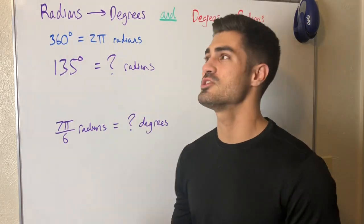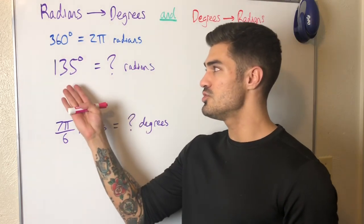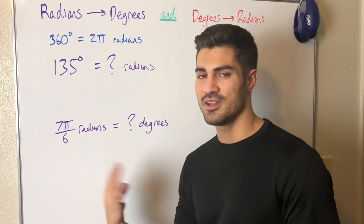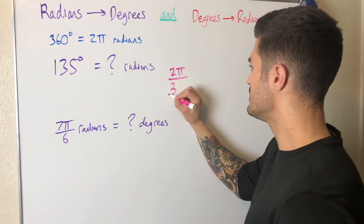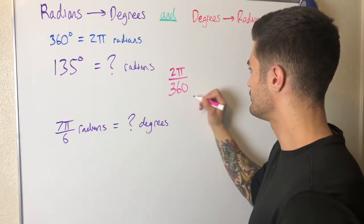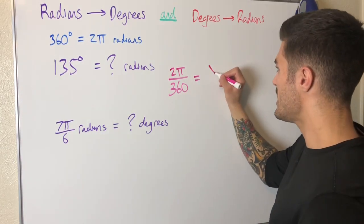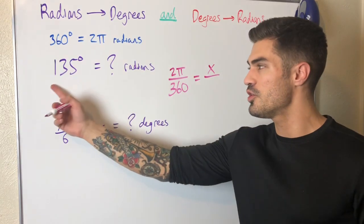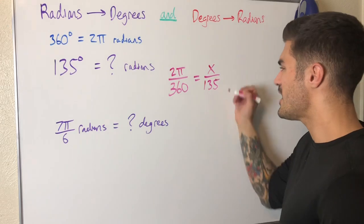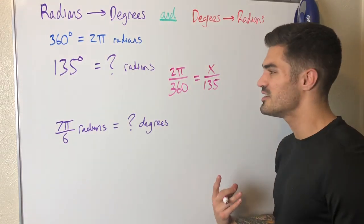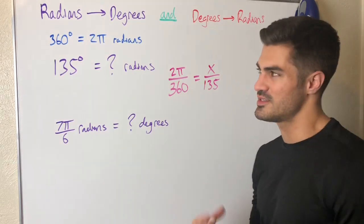We're gonna use this fact to basically construct a general way to get from degrees to radians and radians to degrees. The way I do it is I set up what's called a proportion. I set up 2π over 360 equals x over 135, where x is what I'm trying to solve for. This is what 135 degrees is in radians. The way I read this out loud to understand it is I say 2π is to 360 as x is to 135.